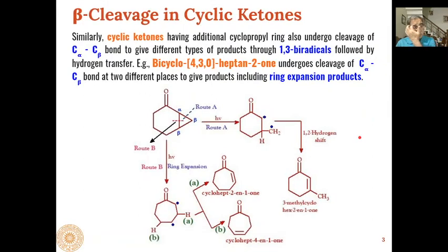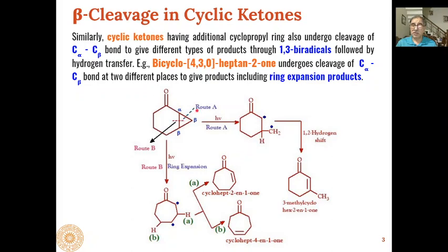Beta cleavage reactions can also take place in cyclic ketones that contain a cyclopropyl ring in addition to the ketone. In these compounds, the C-alpha C-beta bond is also a weak bond and can be broken. However, in these types of ketones there are two possibilities for breaking the alpha-beta bond.